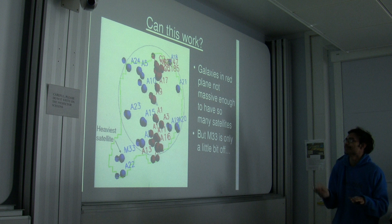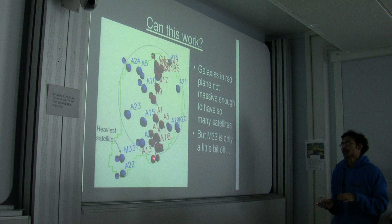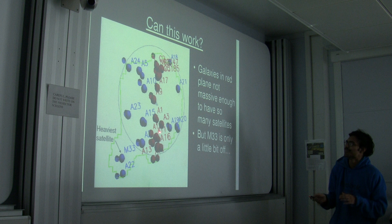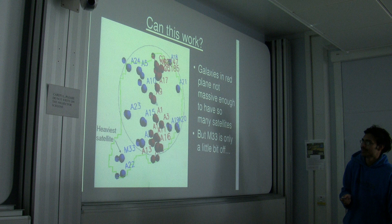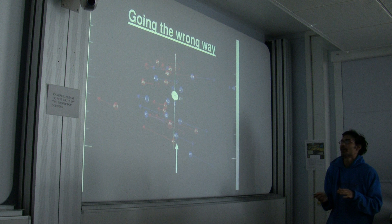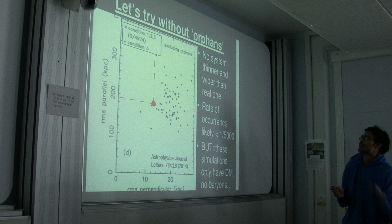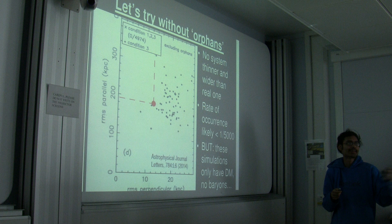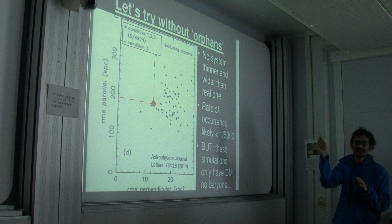This is a good idea because it will lead to results looking like that, and it might explain the actual system. The thing is, none of Andromeda's satellite galaxies are really heavy enough to have hosted all of them like that. You could argue about M33 — but the issue is that M33 is going the wrong way. So that can't be the right explanation. If you exclude these 'often satellite' disruption scenarios, you can't actually get anything thinner and wider than the real system. With 5,000 galaxies, the rate of occurrence would be less than 1 in 5,000.